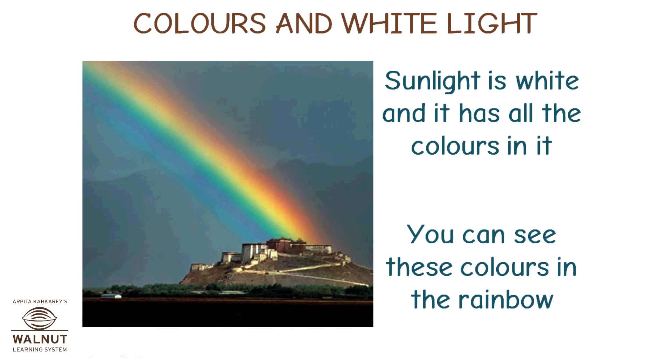Colors and white light. Sunlight is white and it has all the colors in it. You can see these colors in the rainbow.